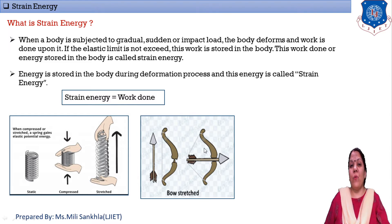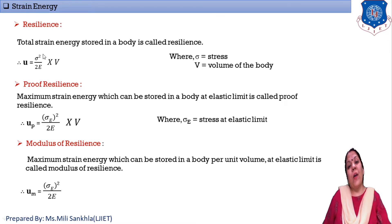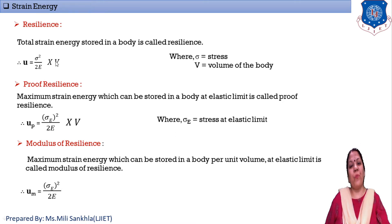Now we discuss three definitions. The first definition is resilience: the total strain energy stored in a body is known as resilience. Its formula is U = (σ² / 2E) × V, where σ is stress, E is Young's modulus, and V is volume (area × length).